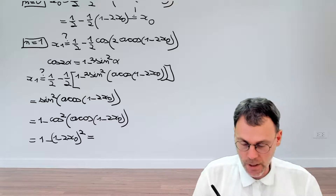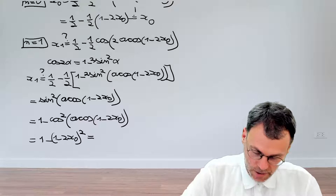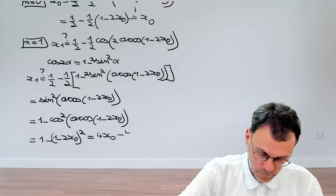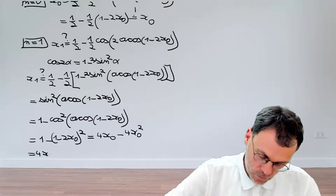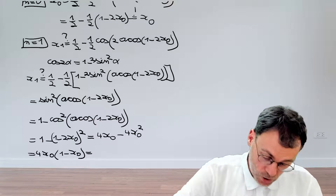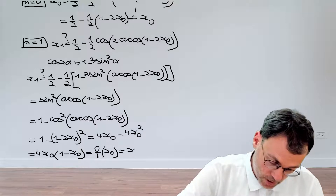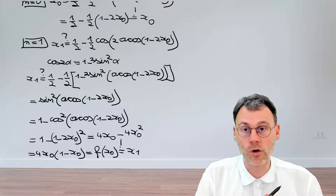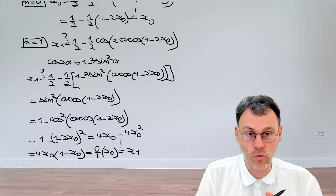If we expand this: one minus one cancels, and the minus sign also cancels, so we have four x₀ minus four x₀ squared, which is four x₀ times one minus x₀. This is indeed f of x₀ equal to x₁. So we have shown that this formula is also valid for n equal to 1.